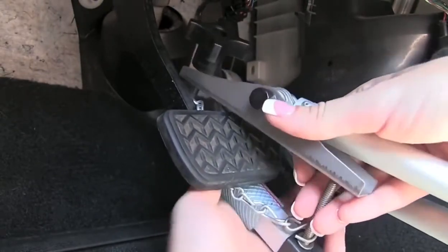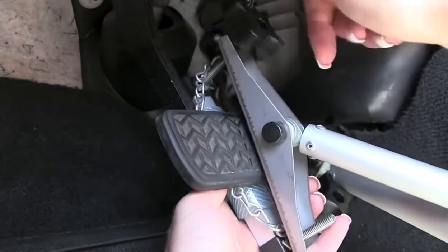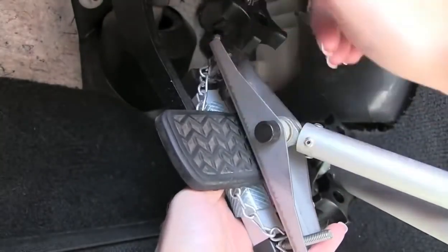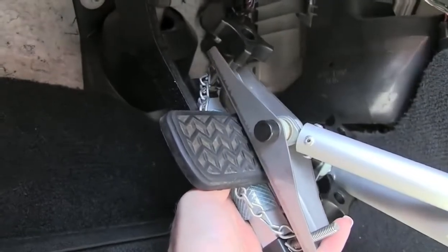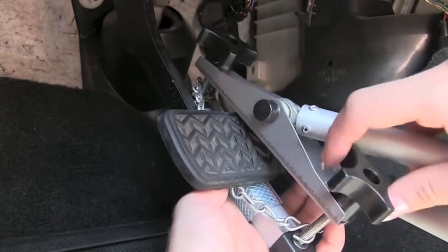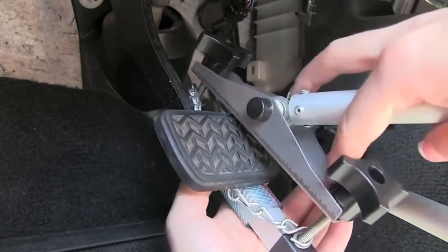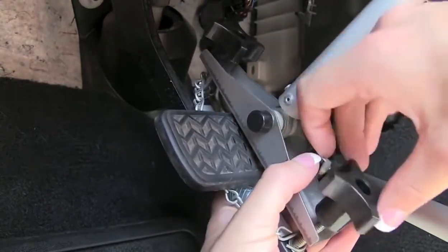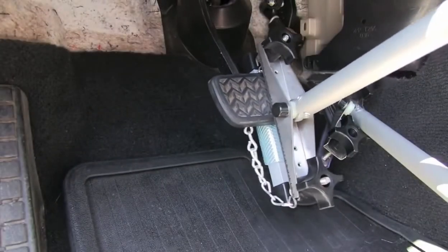Next we are going to take the top portion of the brake assembly, place it through the screw and tighten the knobs. Make sure to tighten them good because it needs to stay nice and secure against the brake pedal. And now we have assembled the brake pedal clamp.